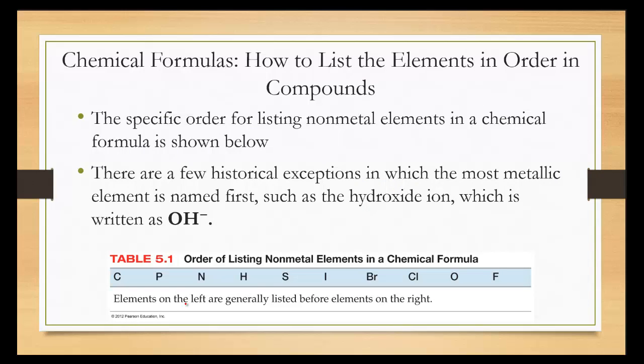The specific order for listing non-metal elements in a chemical formula is shown right here. Here, once again, sulfur and oxygen. Sulfur was written first. Nitrogen and oxygen. Nitrogen was written first. So the ones on the left are written before the ones on the right. But there are a few historical exceptions in which the most metallic element is named first, such as hydroxide, which is written OH and not the other way around, even though H is written first on the list.